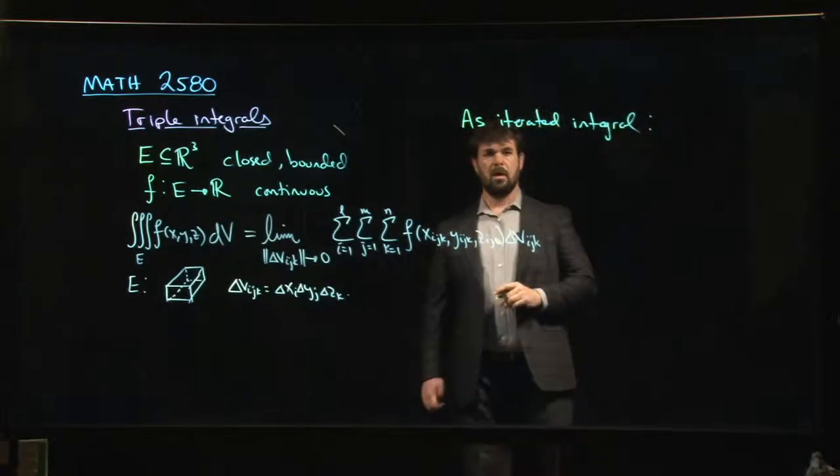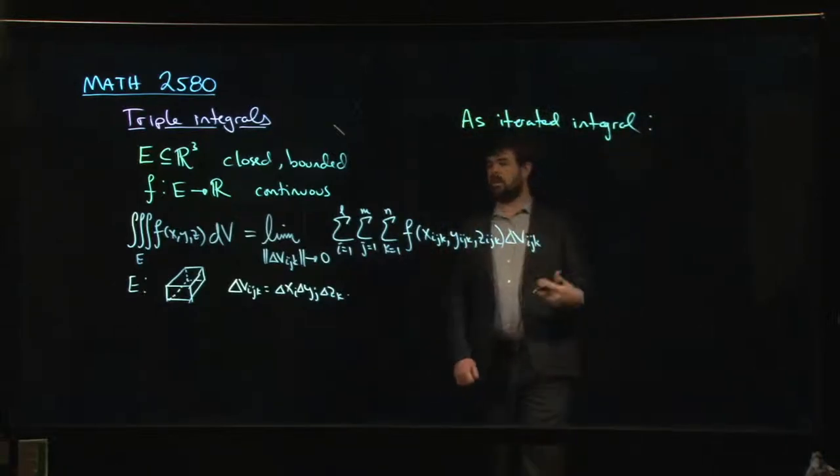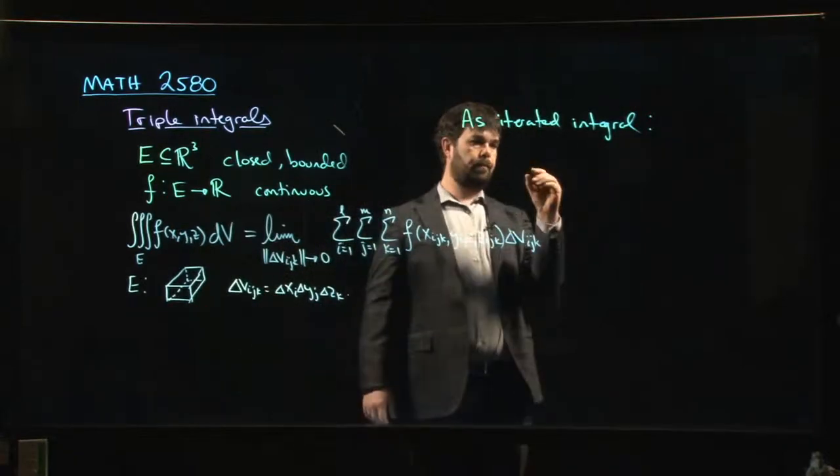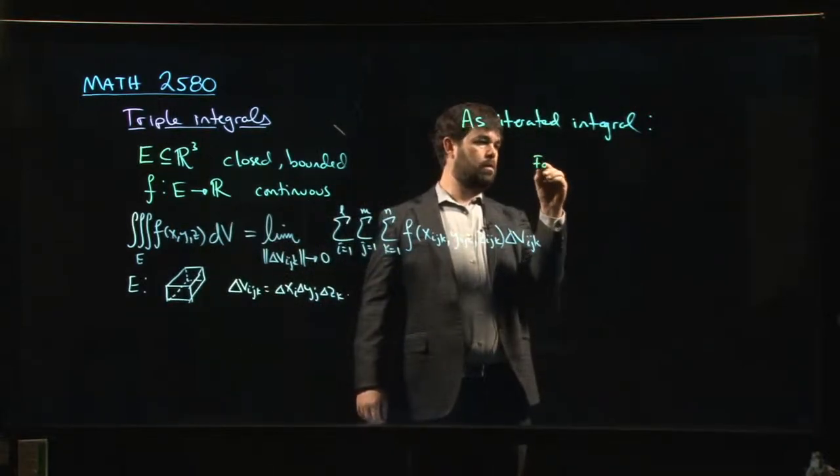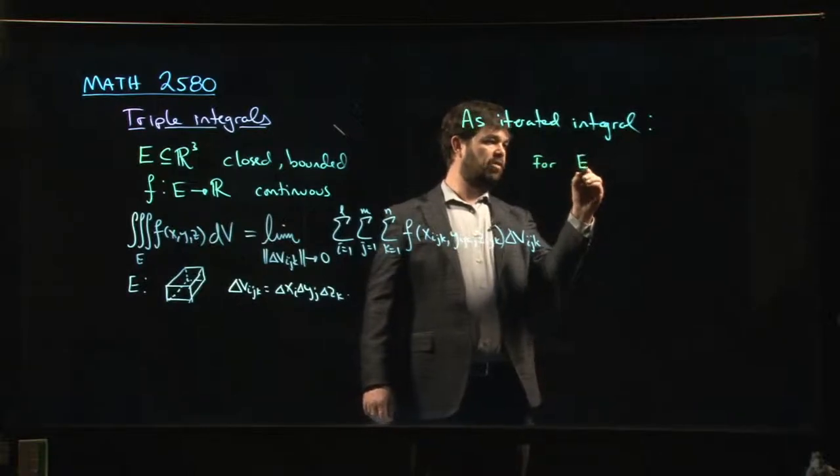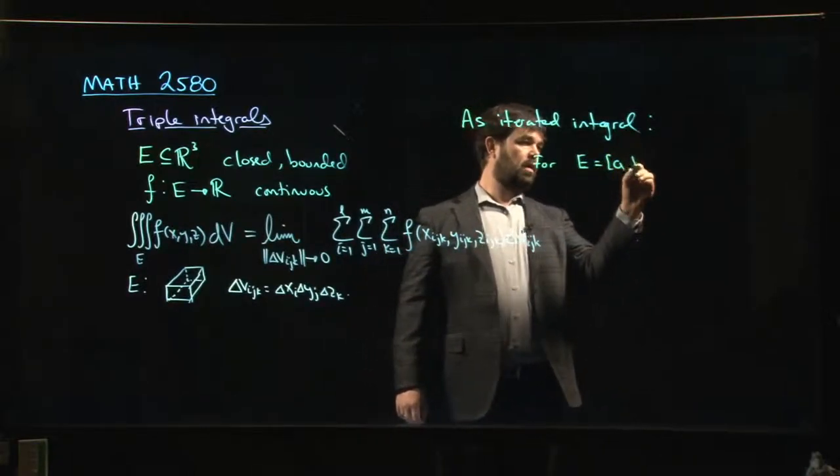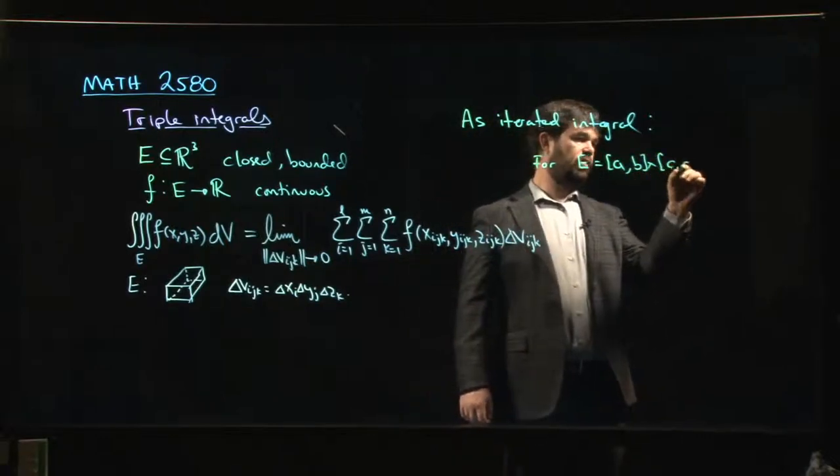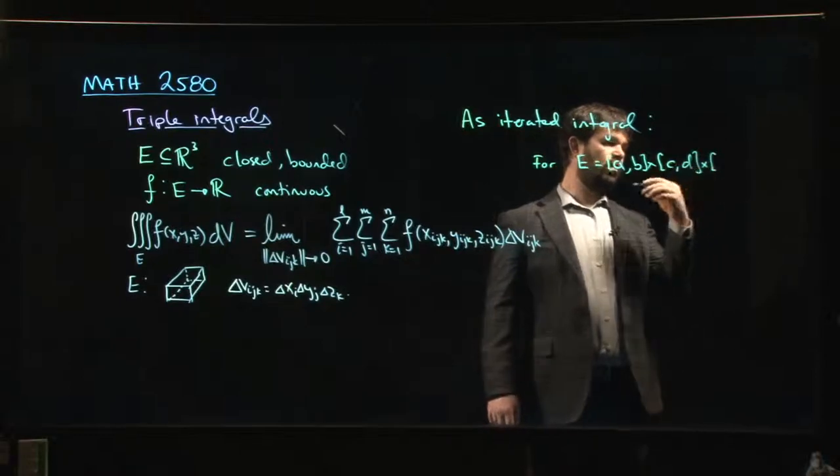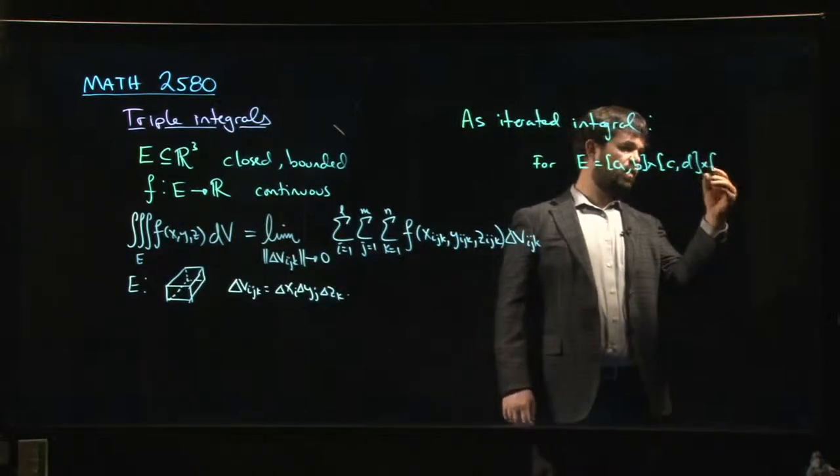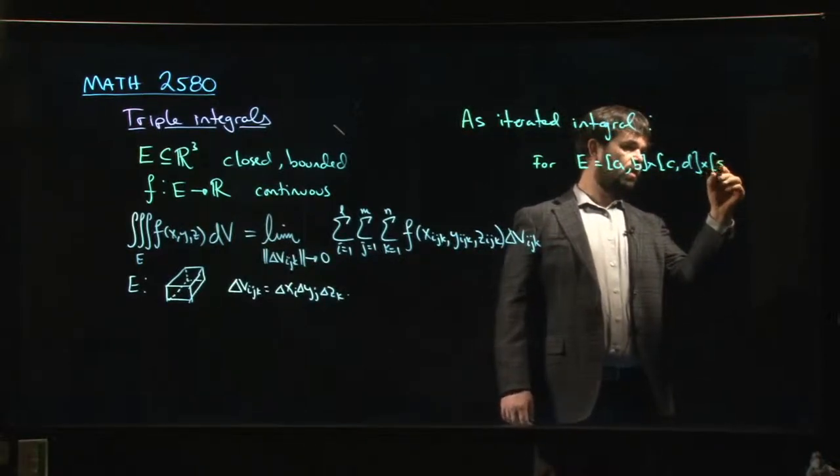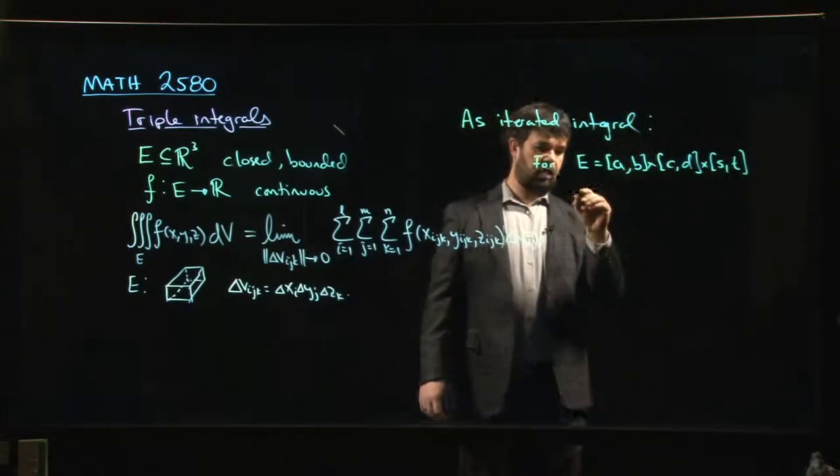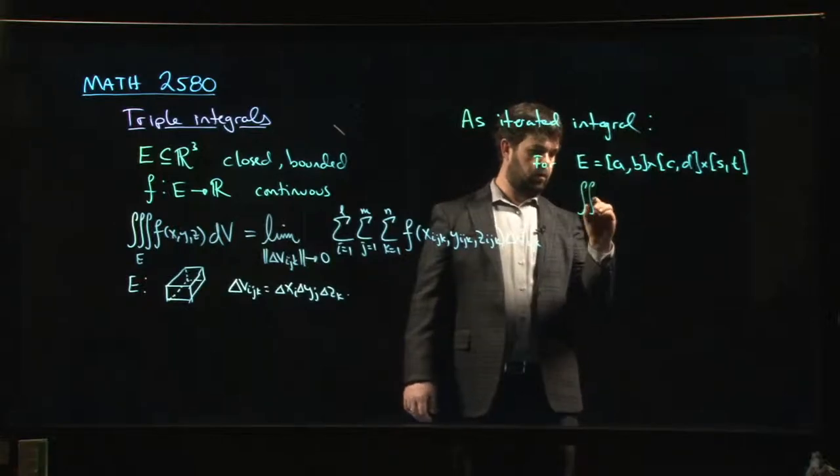Well, so now we're going to move on and, I mean, if our region E is sort of a box like this, if it's, say, X goes from A to B, Y goes from C to D, Z goes from, I don't know, somehow E and F are not good letters for numbers. Let's say S to T.